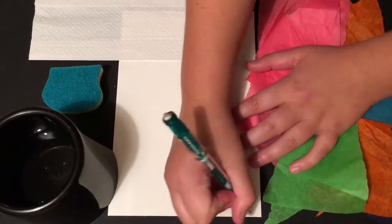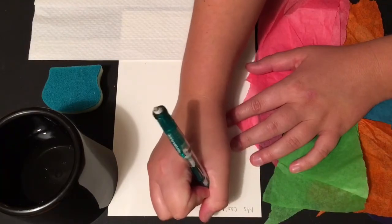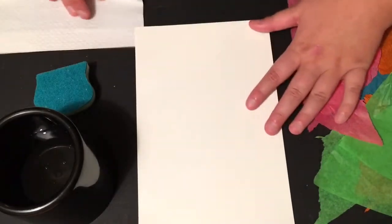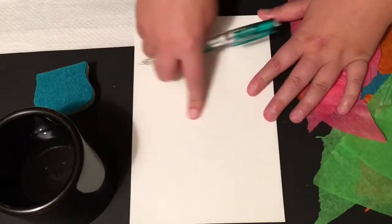The first step for any project is to write your name on the paper. After your name is written, you are going to take the paper and turn it over. The textured side should be faced up.